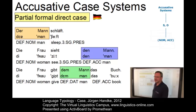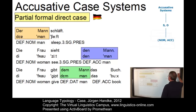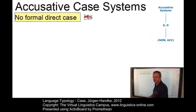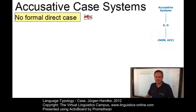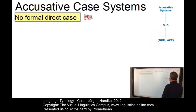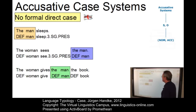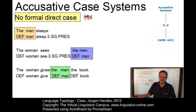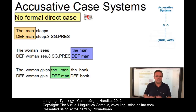Finally, there are languages with no formal direct case distinction — present-day English. The man sleeps, the woman sees the man, the woman gives the man the book. In each case we have 'the man' with no case marking at all.